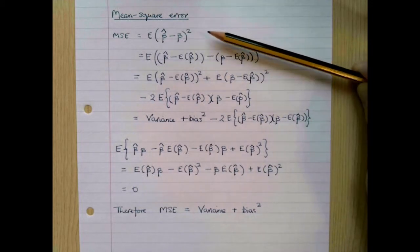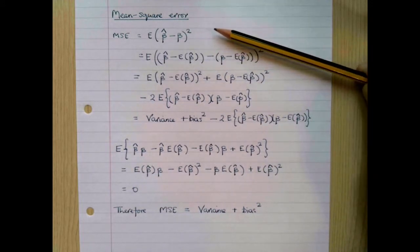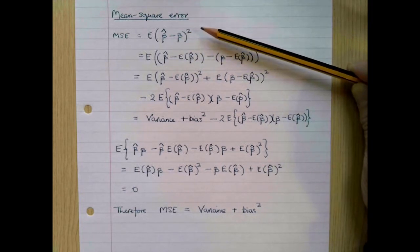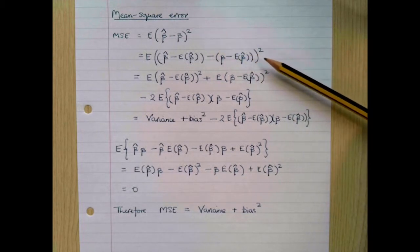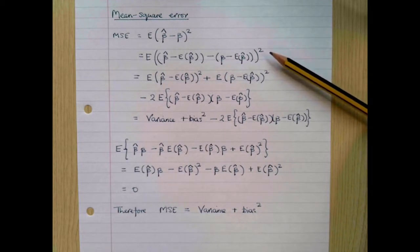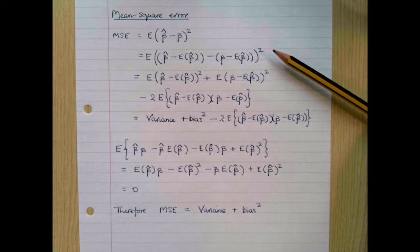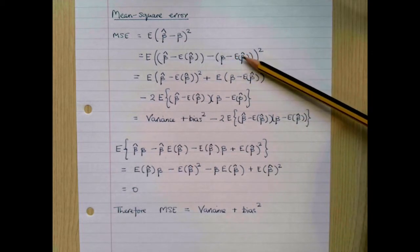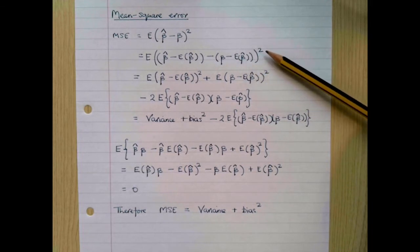To show this, let's start with the definition of the mean square error. The mean square error is the expected difference between the estimator β̂ and the true value β, squared. We can rewrite that by subtracting and adding the expected value of β̂ within the brackets, to write this as the expected value of β̂ minus its expected value, minus β minus the expected value of β̂, all squared.